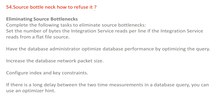Source bottleneck — how to resolve it? To eliminate source bottlenecks, complete the following tasks: set the number of bytes that the integration service reads per line if it reads from a flat file source; have the database administrator optimize database performance by optimizing the query; increase the database network packet size; configure index and key constraints; and if there is a long delay between two time measurements in a database query, you can use optimizer hints.